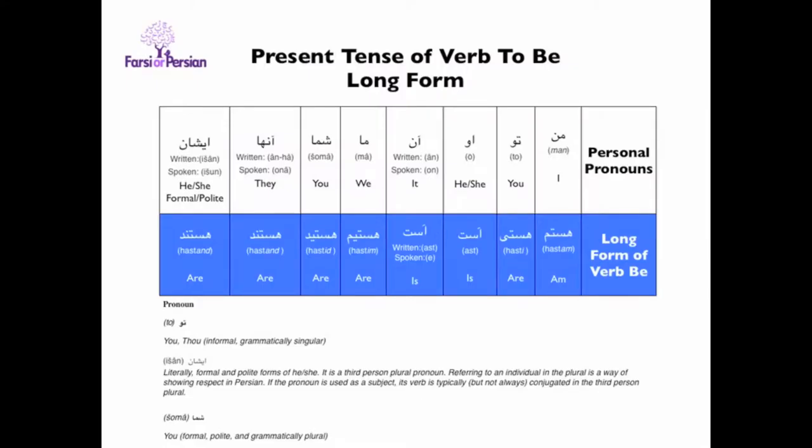Be is a special verb in Persian because it has two forms: long form and short form. Take a look at the way we conjugate the long form of verb be.